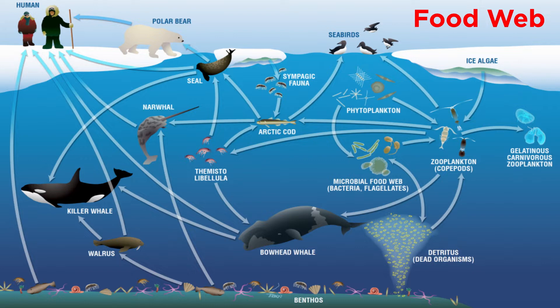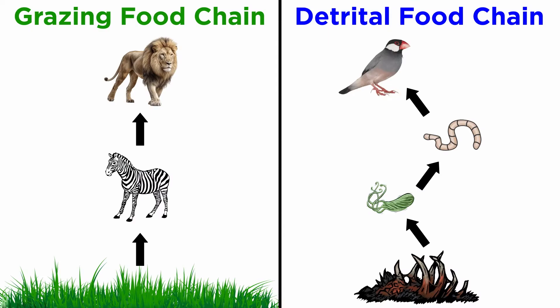Each food chain is a descriptive diagram including a series of arrows, each pointing from one species to another, representing the flow of food energy from one feeding group of organisms to another. There are two types of food chains: the grazing food chain, beginning with autotrophs, and the detrital food chain, beginning with dead organic matter.